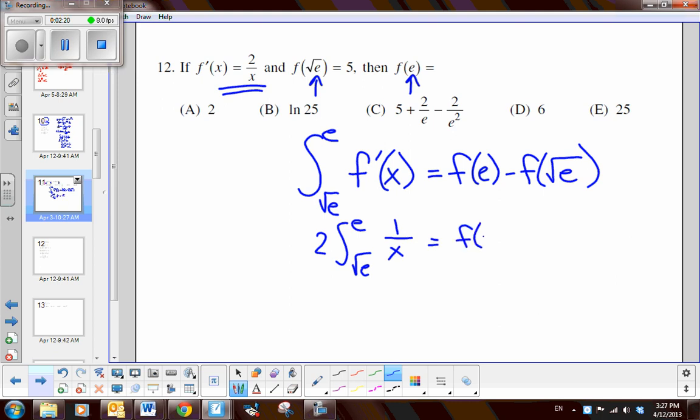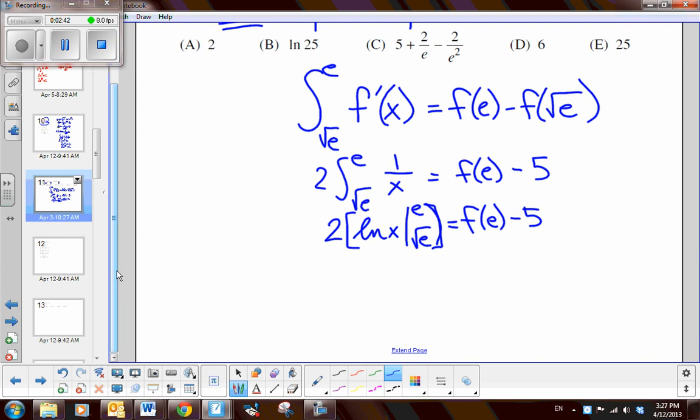Now I'm going to replace f prime of x with 2 times 1 over x. So I bring the coefficient to the front. Square root of e over e. And then this is 1 over x. Okay, equals f to the e, which is my unknown, minus 5. That's given in the problem. So now take the antiderivative. So I have 2 to the natural log of x evaluated from e to the square root of e.